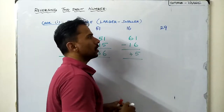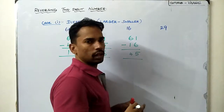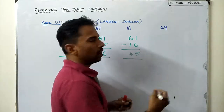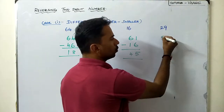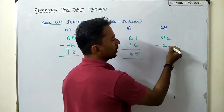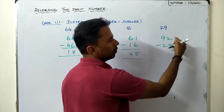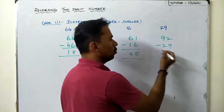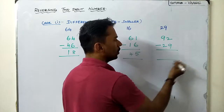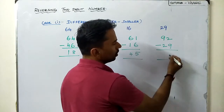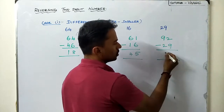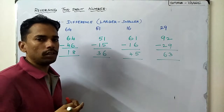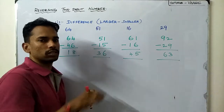The last number is 29. The reverse of 29 is 92. Since 92 is the larger number, we do 92 minus 29. Working it out, we get 3 in the ones and 6 in the tens, giving 63. So we now have all four differences.